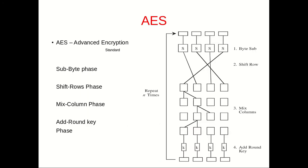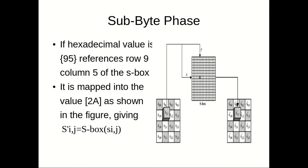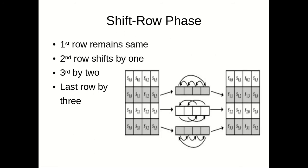Let's get an overview of how the AES algorithm really works. It has four phases: sub-byte phase, shift-row phase, mix-column phase, and add-round key phase. They're simple to work out. We have the S-box, matched by row 9 and column 5, and they are mapped into other boxes using the value 2A. In the shift-row phase, the first row remains the same, the second row shifts by one, the third row shifts by two, and the last row shifts by three.